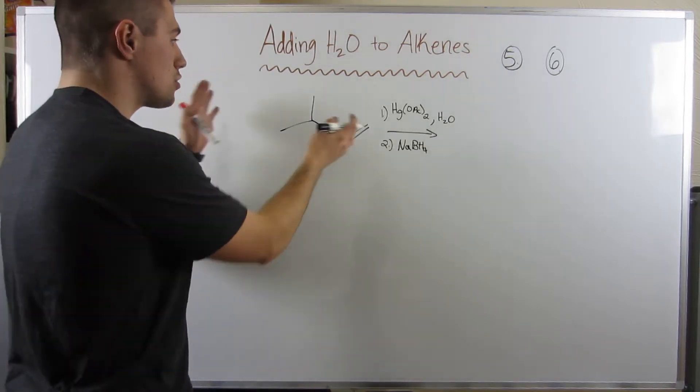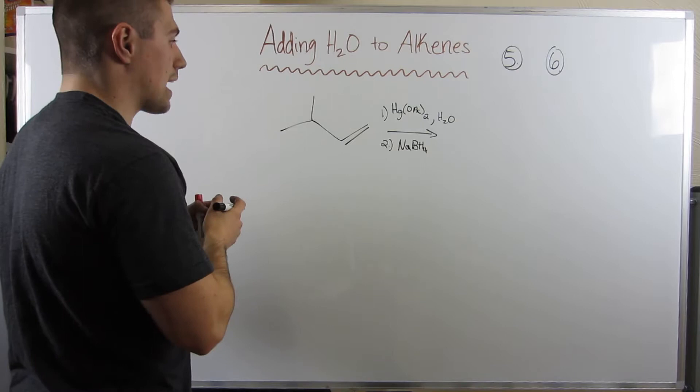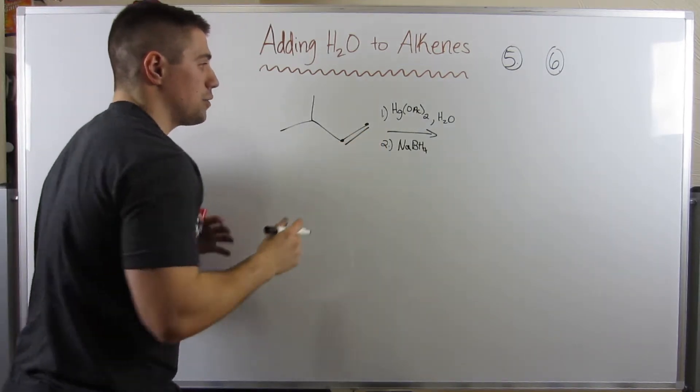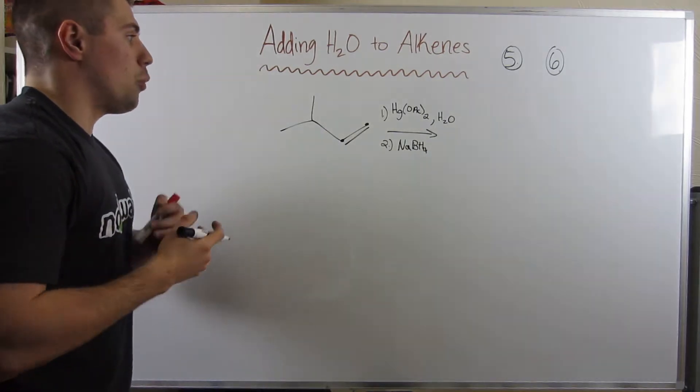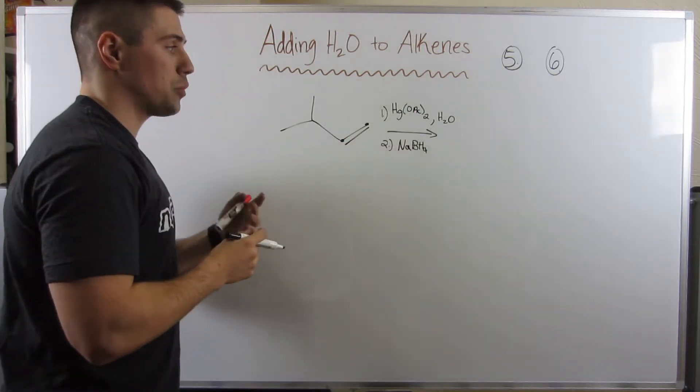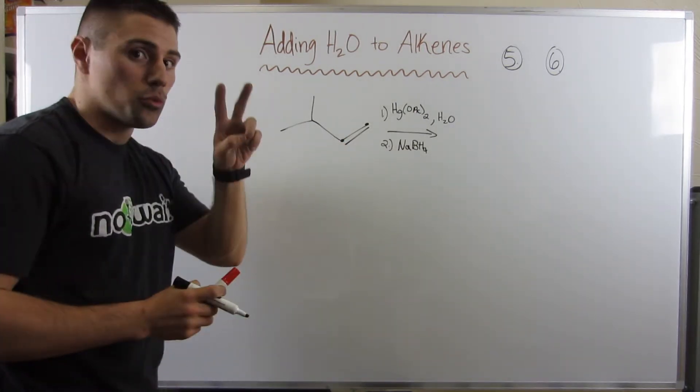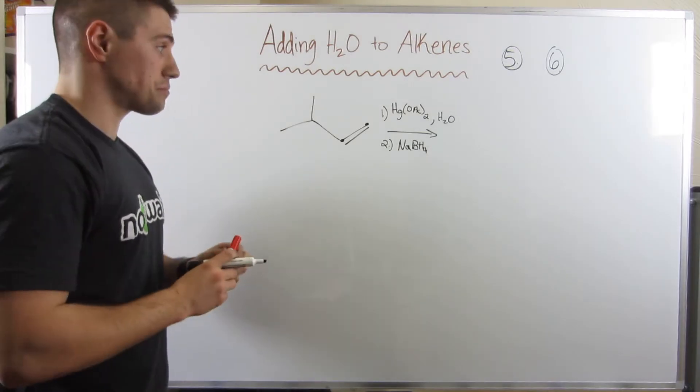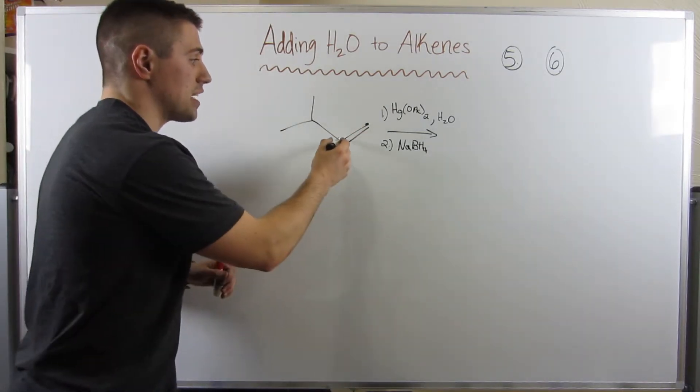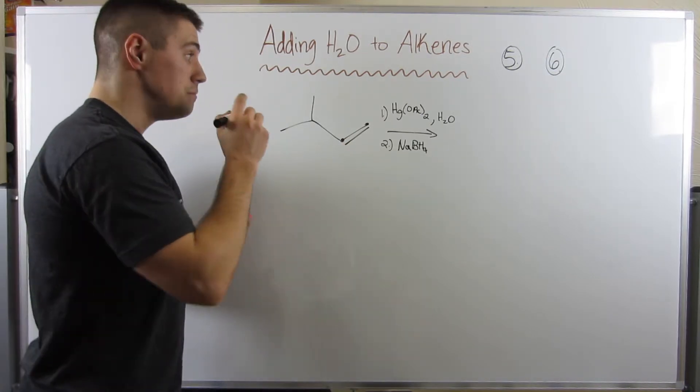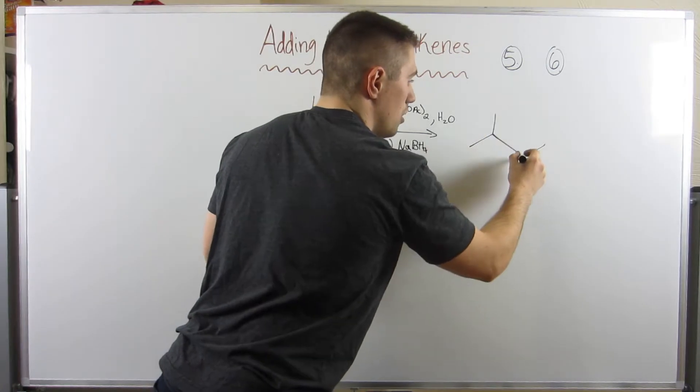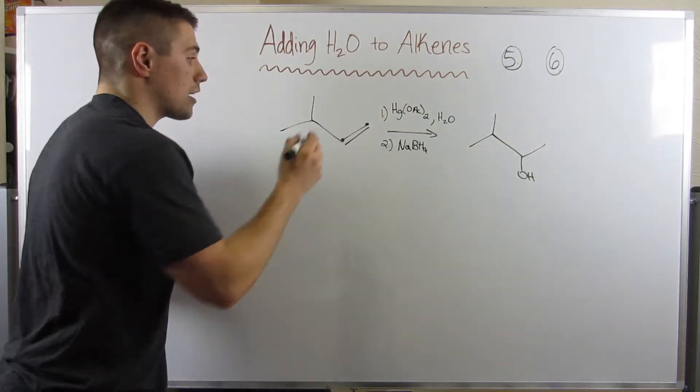You do just a Markovnikov addition with no rearrangements. So the thought process is you look at your reactant, you look directly at the carbons, a part of the double bond. You then say to yourself, okay, who is the most substituted carbon? Who is the carbon with the highest degree? Or if you want to think about it this way, which carbon would make the most stable carbocation? Right, we're dealing with a primary and a secondary, so obviously the secondary is more substituted. And basically, you do an addition of water, you add OH to that carbon, the more substituted one.